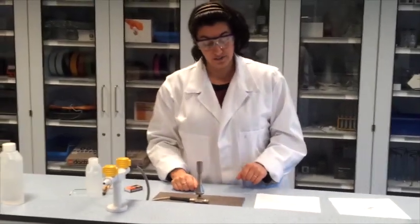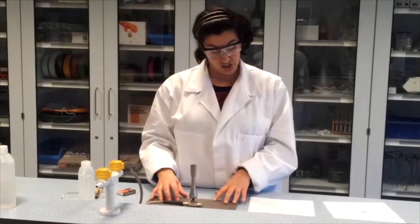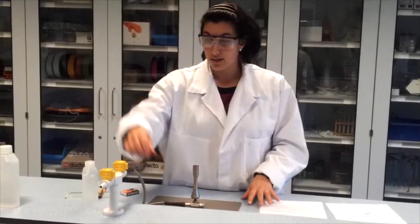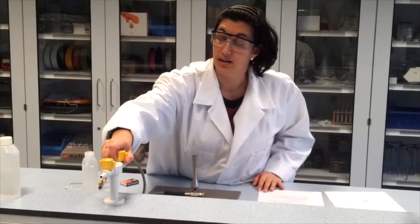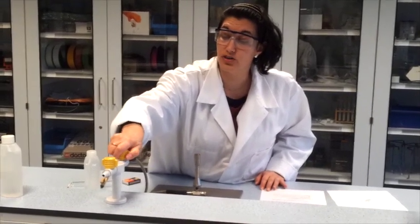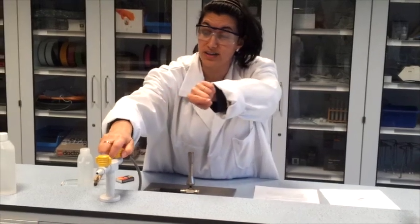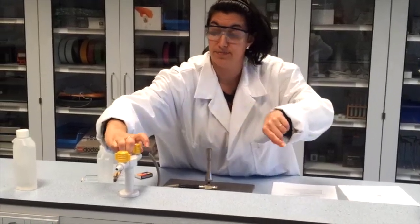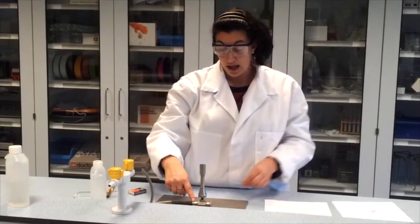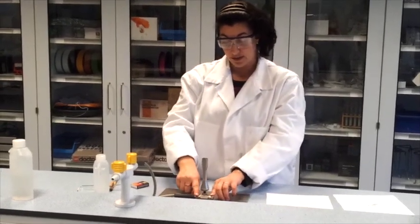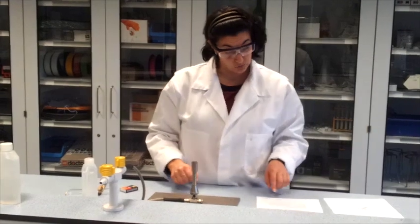Place the Bunsen burner in the middle of the table, not too near to the edge. Then we open the gas tap. We do that by pulling the knob upwards and turning counter-clockwise which is to the left. Now the gas streams through the rubber tubing up to this point. It can't go further because the knob is closed.